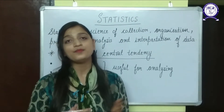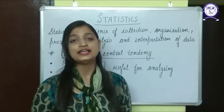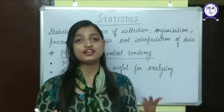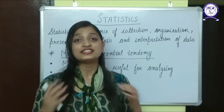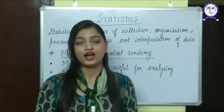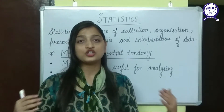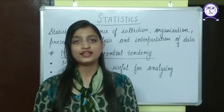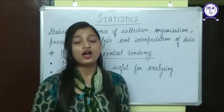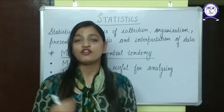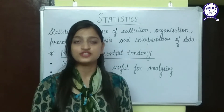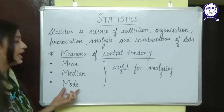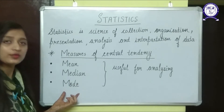What do you mean by measures of central tendency? A lot of data is given to us and we try to find the central point of the data — the point towards which the data attracts, the central part of that data. We have three types of measures of central tendency: mean, median and mode.